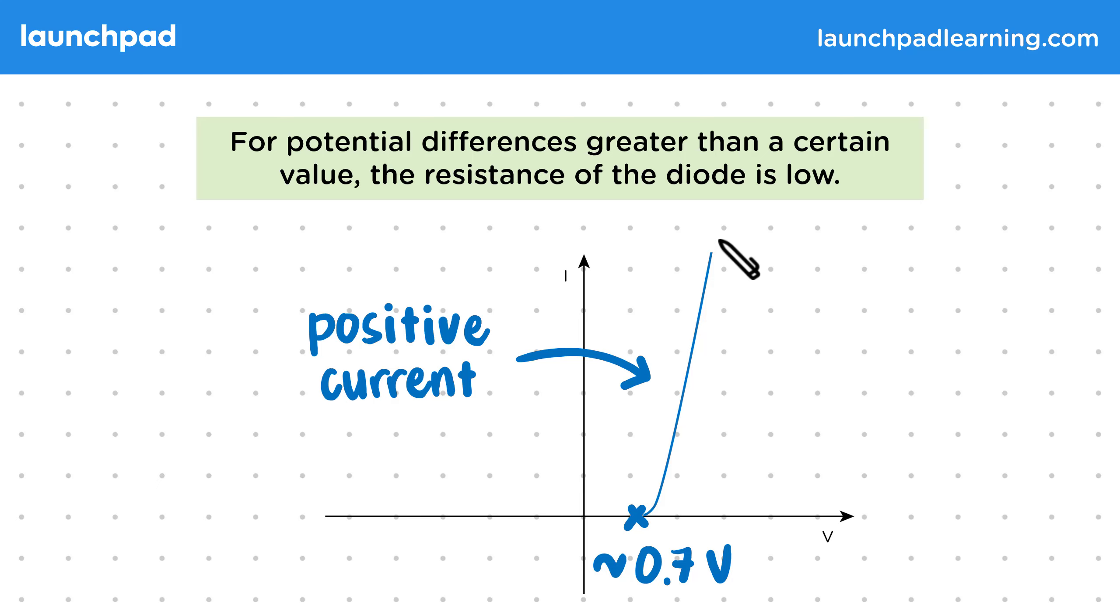Also, we can see that the graph is quite steep above this potential difference. This tells us that the diode has low resistance. Since remember, the steeper the IV graph, the smaller the resistance.